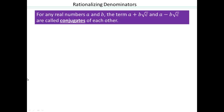For any real numbers, if you have a number a plus b times square root of c, then a minus b times square root of c is called its conjugate. Same everything except the plus is changed to a minus — these two are conjugates of each other.